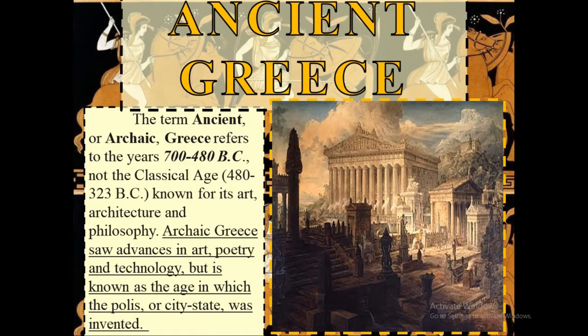The term ancient or archaic Greece refers to the years 700 to 480 BC, not the classical age which started at 480 to 323 BC. Known for its art, architecture, and philosophy, archaic Greece saw advances in art, poetry, and technology, but it is known as the age in which the polis, or city-state, was invented.